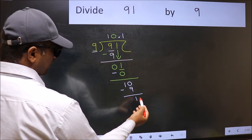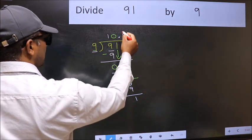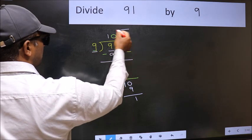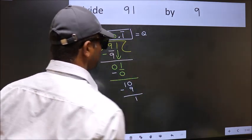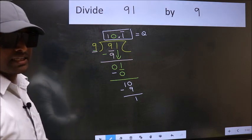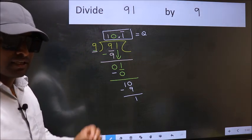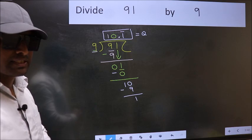We got 1 again. That means we get bar on this number. So this is our quotient. Did you understand where the mistake happens? You should not do that mistake.